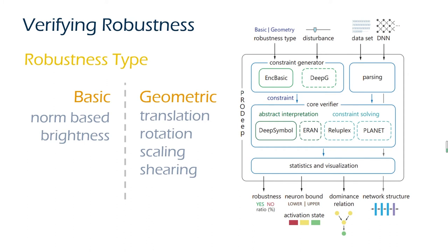According to different types of disturbance, there are two categories of robustness. The basic transformations only affect single neurons, while the geometric transformations like translation, rotation, scaling, and shearing try to perturb the entire input. We use the state-of-the-art tool DeepG to generate constraints for geometric properties.